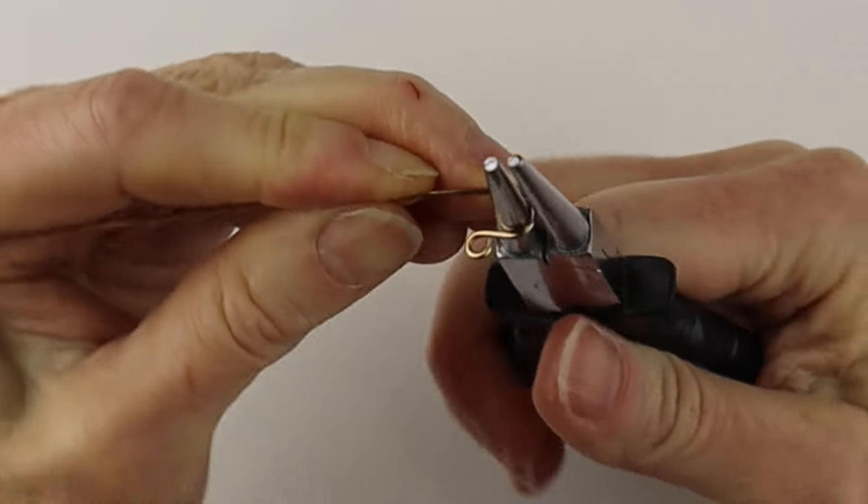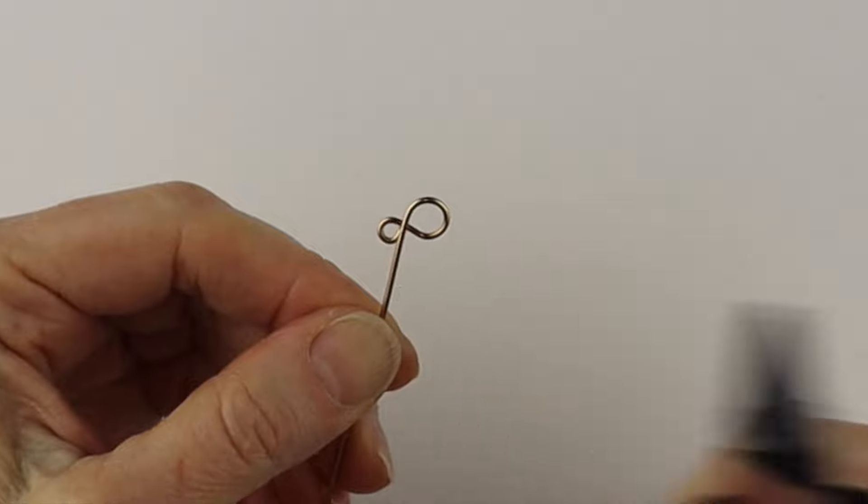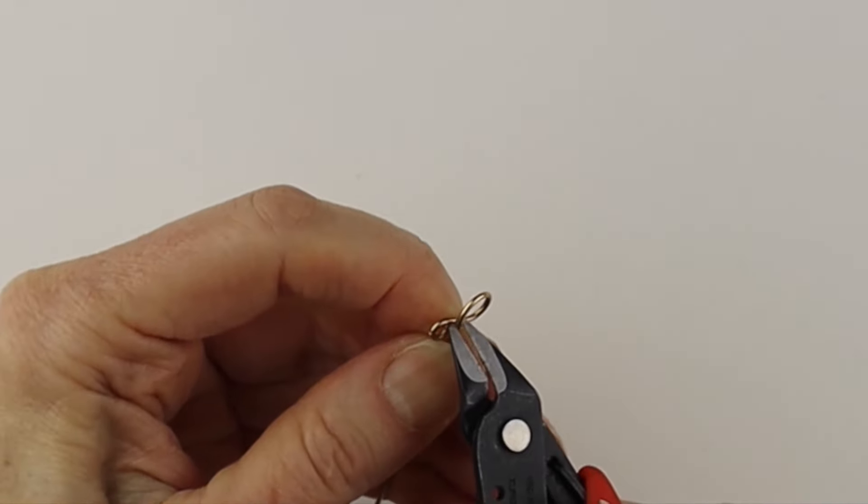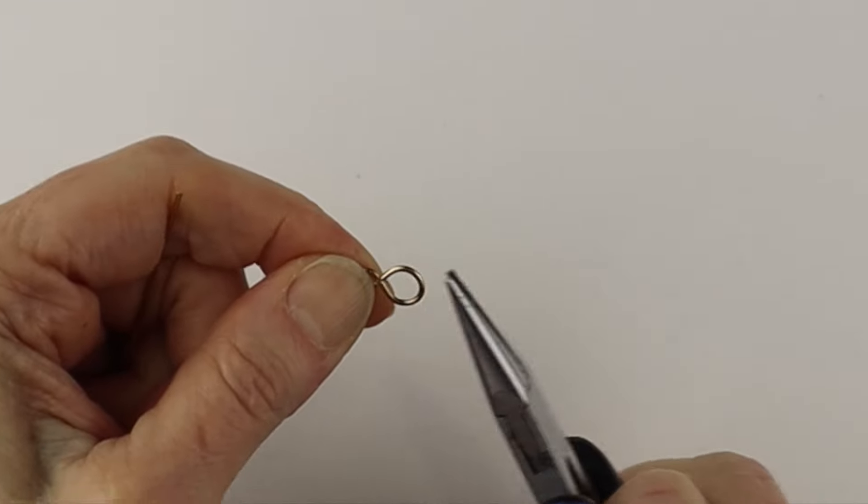Then we'll take our larger round pliers, put them in here. It looks a bit like an infinity sign, but one loop is bigger than the other. Then we're just going to cut that flush and pinch that so it's closed. You could even tap it a bit with a hammer if you like.